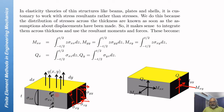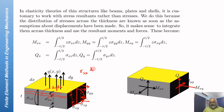For example, to calculate the moment generated by the sigma XX stress per unit length of the plate, take a small element of area. This element has an area of DY times DZ, and the traction on this area is sigma XX. The moment caused by sigma XX is integrated from minus T/2 to plus T/2. The moment per unit length in the Y direction gives the moment MXX acting on this plate.